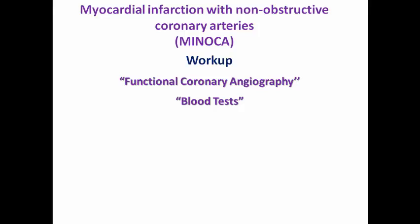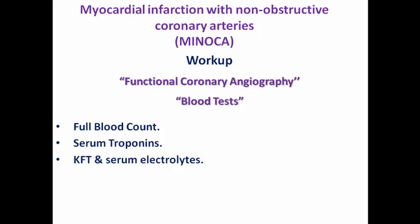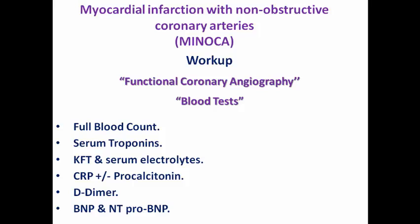Blood tests during hospital admission include full blood count for hemoglobin level, serum troponins to diagnose MI, kidney function and electrolytes for prognosis, CRP — markedly elevated CRP may suggest inflammatory disease, malignancy, or sepsis — procalcitonin to exclude sepsis, D-dimer which is elevated in both MI and pulmonary embolism, and BNP or NT-proBNP if LV dysfunction is suspected.